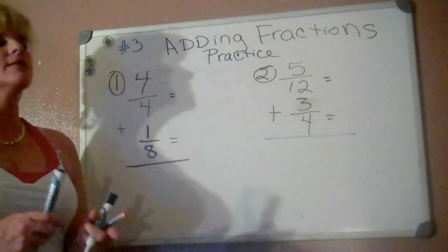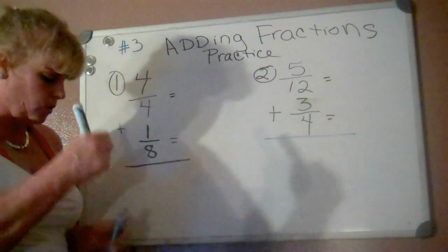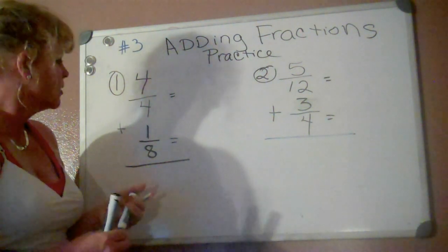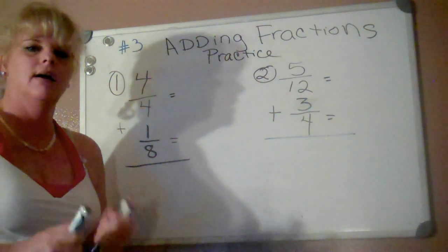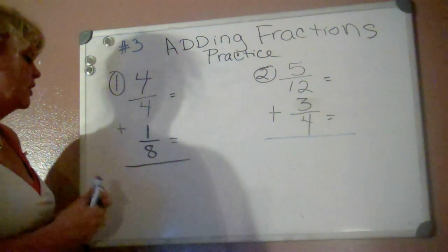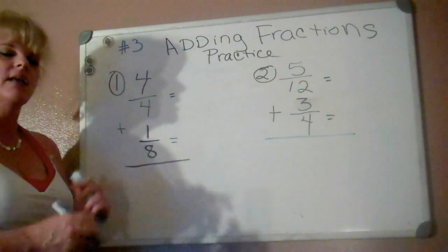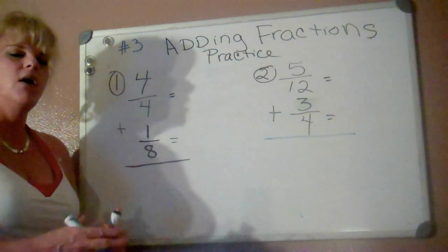Anyways, we learned that when we add and subtract fractions, the main rule we want to know is that we have to find the least common denominator. Okay, so we have to find this bottom number right here. You know, something that they both go into in the smallest number.